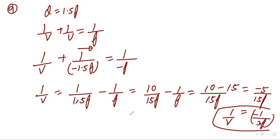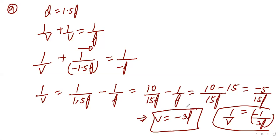Therefore v = −3f. This is the image distance for an object placed at 1.5f from a concave mirror. Please write it down.